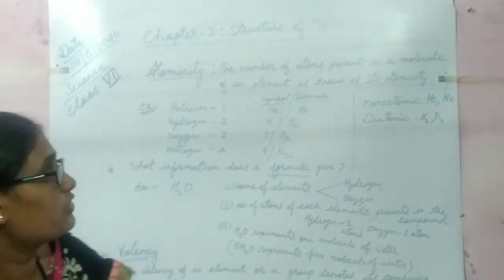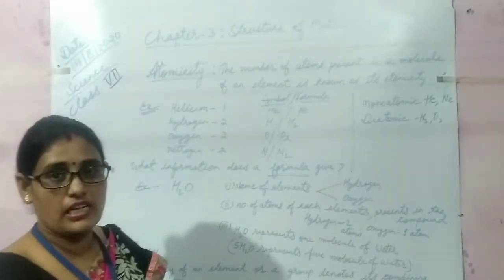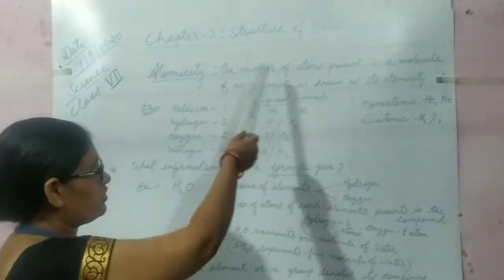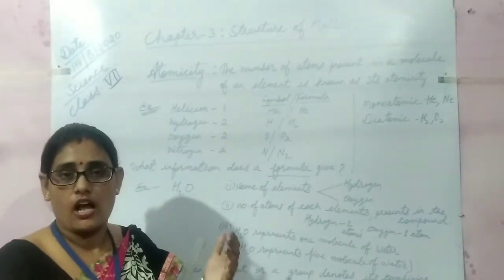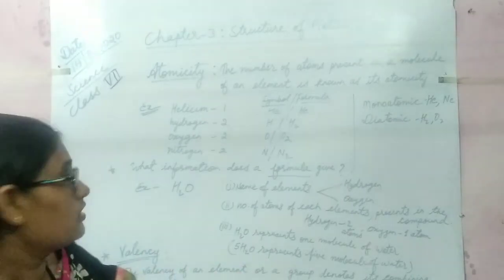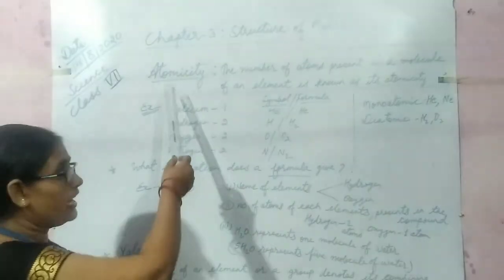Good morning students. I am Anshuman. Today I am going to start the next topic of chapter 3, Structure of Matter. In the previous video, I explained in detail about symbols and formulas. Today I am going to explain atomicity.